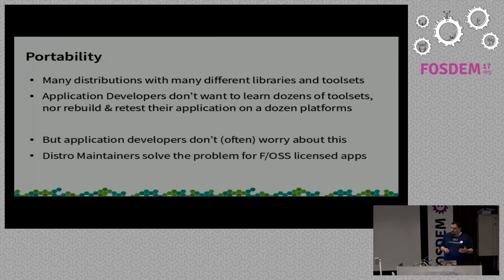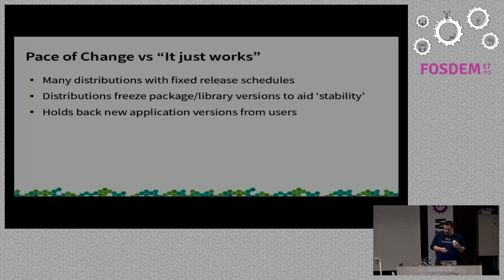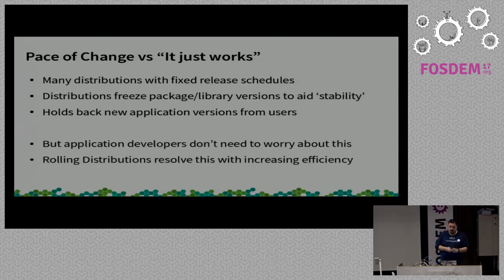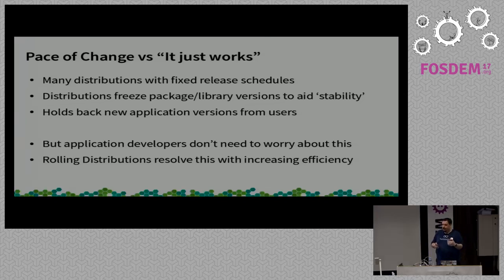But does it really matter if somebody's rebuilding it anyway? And then the pace of change problem — distributions generally have fixed release schedules, and those generally mean package versions are frozen. Any changes are very reluctant. So that holds back new versions, new innovations, new things projects have released from users. That's a bad thing. Rolling distributions are becoming more of a trend. In the case of OpenSUSE, we're now doing Tumbleweed as one of our main distributions, and this totally solves that problem. In some cases, we sometimes outpace upstream and have to actually slow things down so we're not shipping their next release before they are.